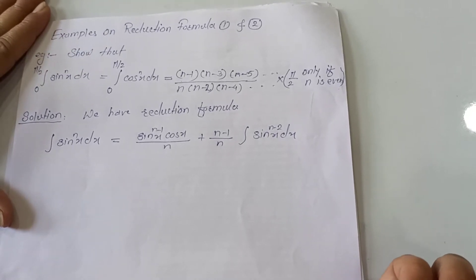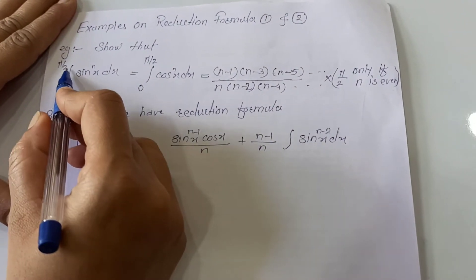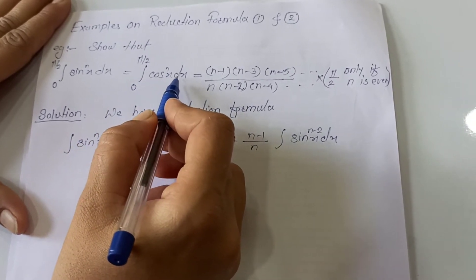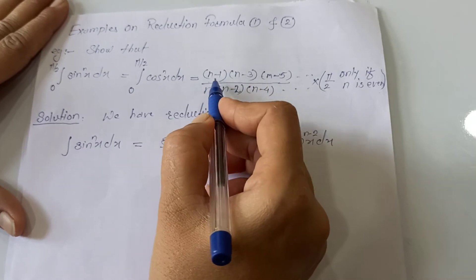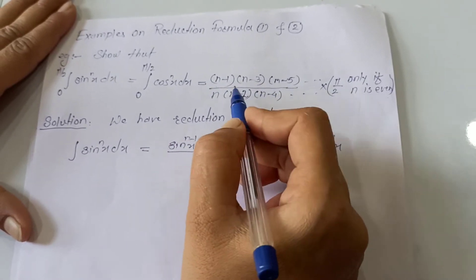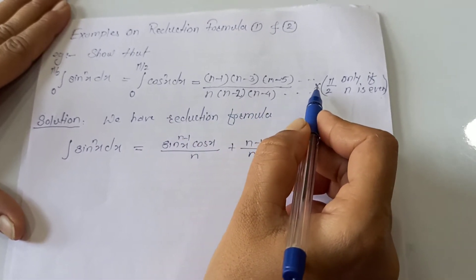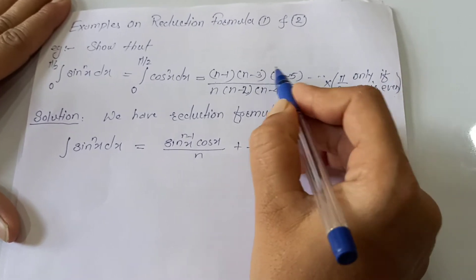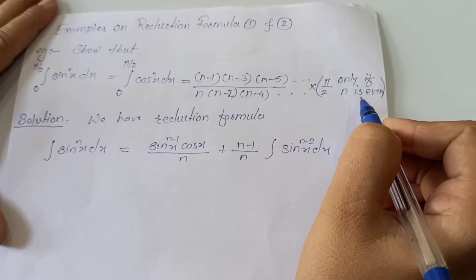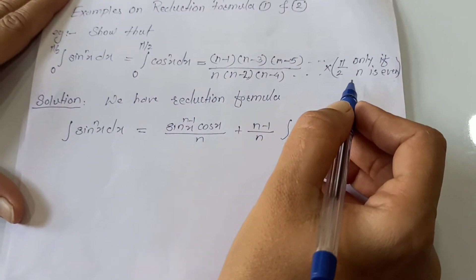This is a very important example. We will show that the integration of sin raised to n of x dx with limits from 0 to pi by 2 is the same as integration of cos raised to n of x dx from 0 to pi by 2, and equals (n−1)(n−3)⋯ divided by n(n−2)(n−4)⋯, with this entire fraction multiplied by pi by 2 only if n is even.